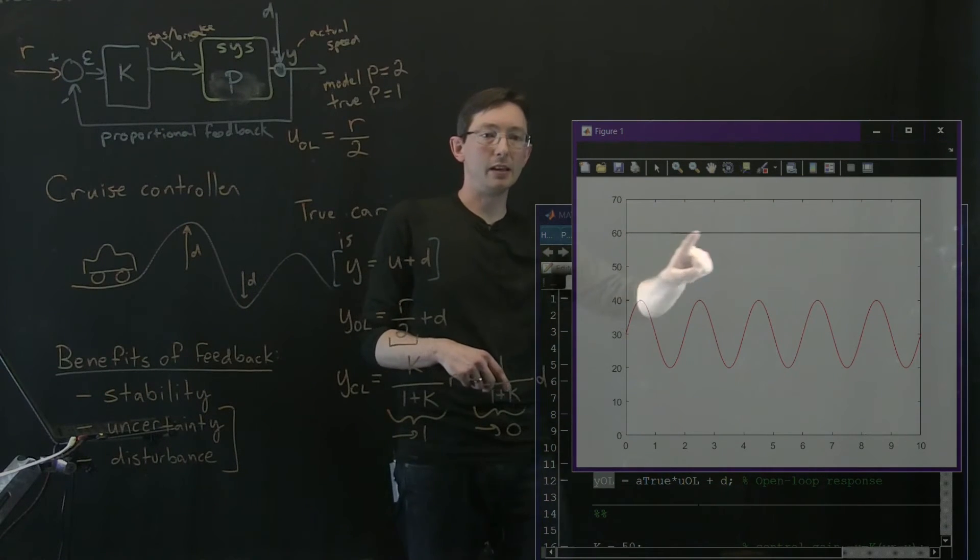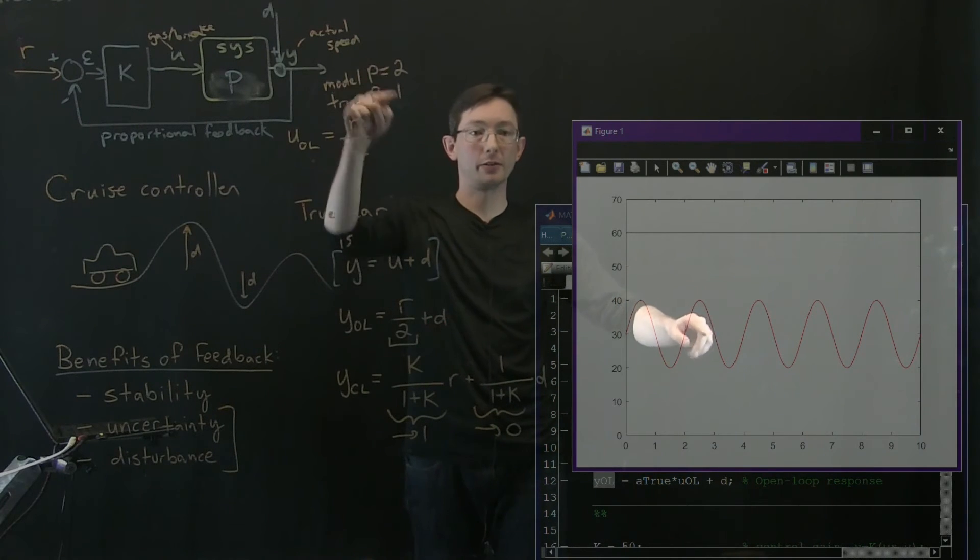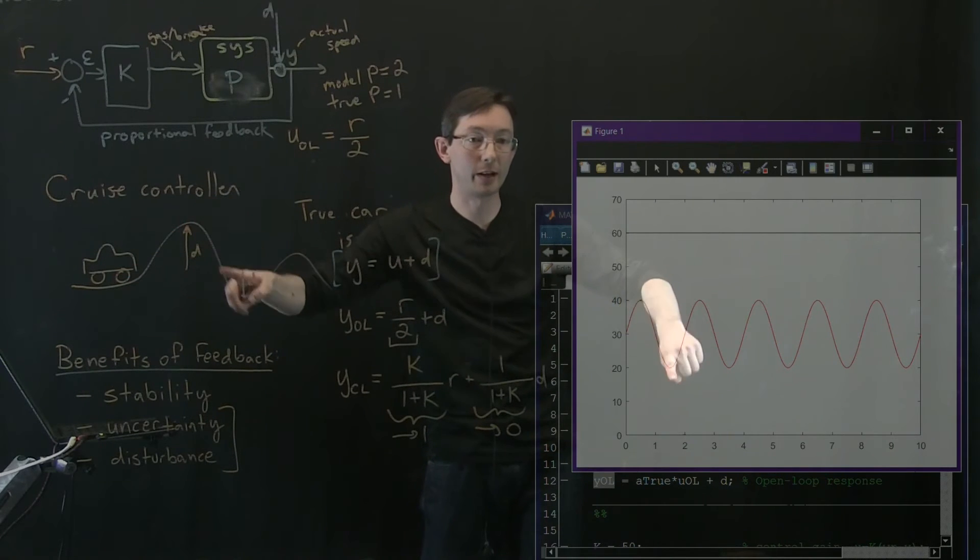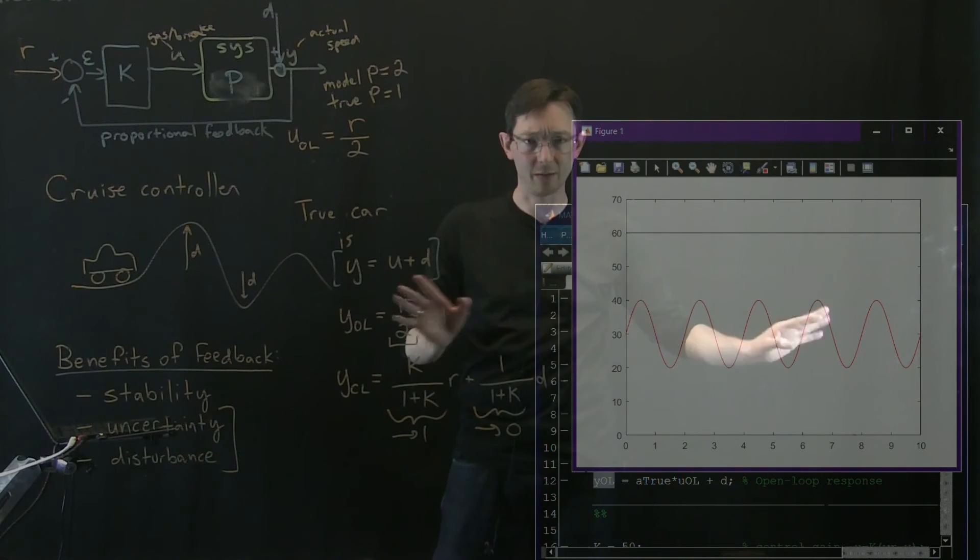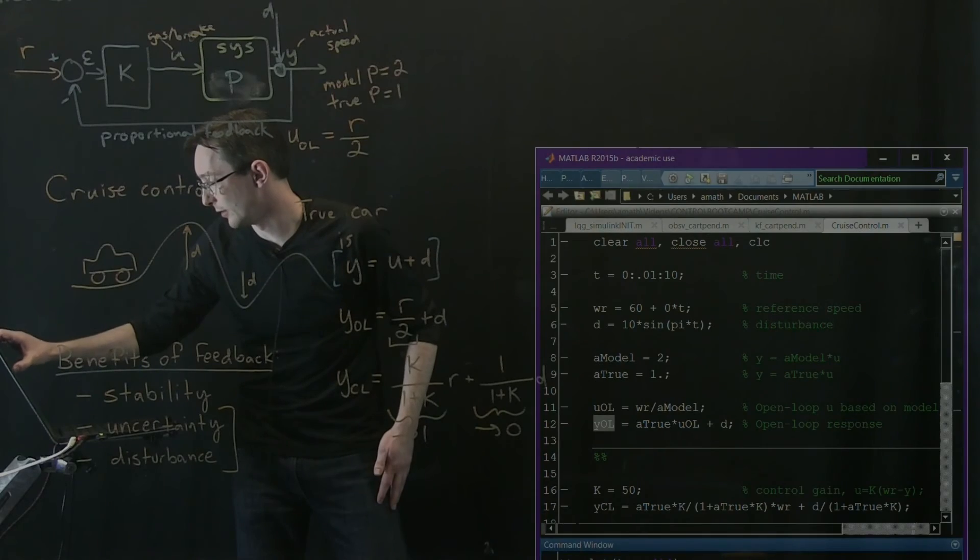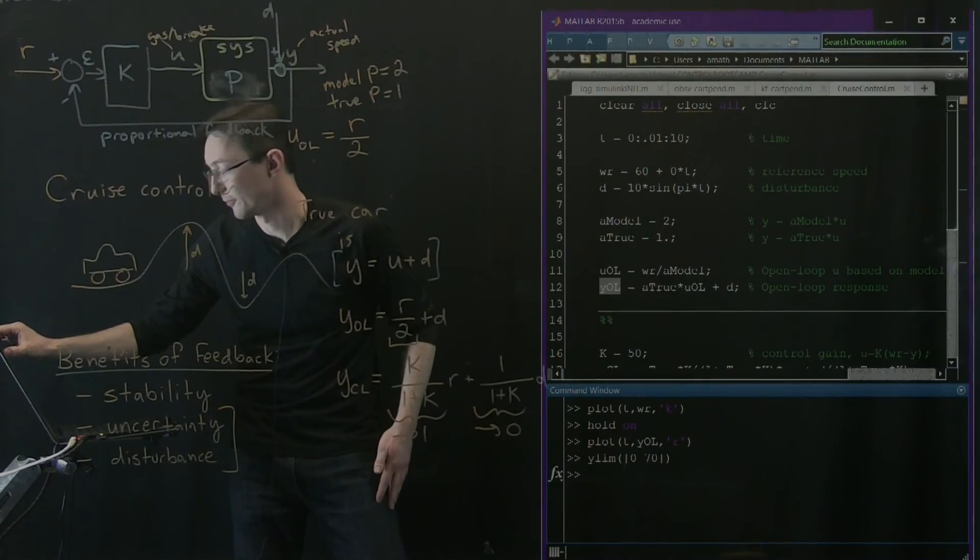So my reference speed is 60 miles per hour, but my open loop controller is doing a really terrible job. Because my model was off by a factor of two, instead of tracking at 60 miles per hour, it's tracking at an average of 30 miles per hour. And the disturbances from my rolling hills are passing right through my open loop controller and my speed is all over the place. Terrible control law. I would not recommend you get in a car that uses open loop cruise control.